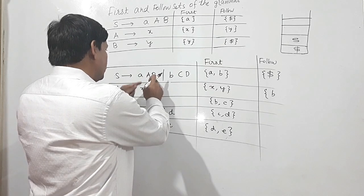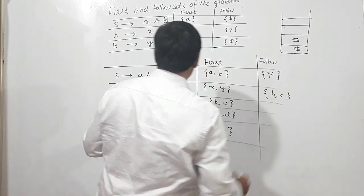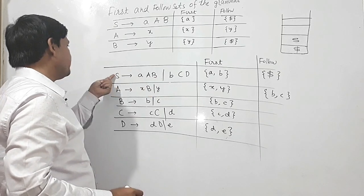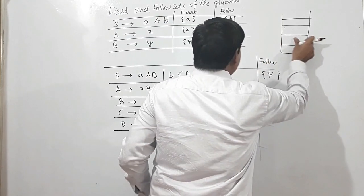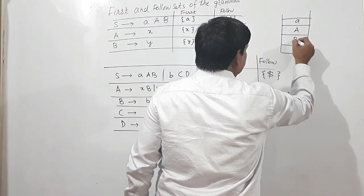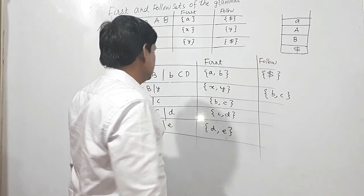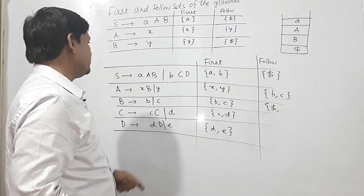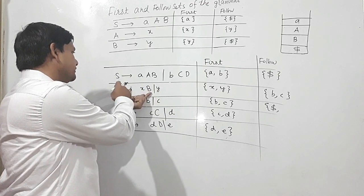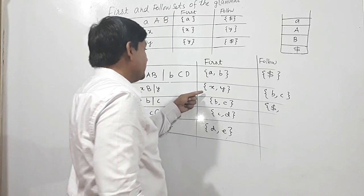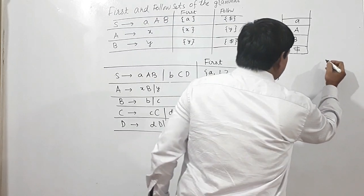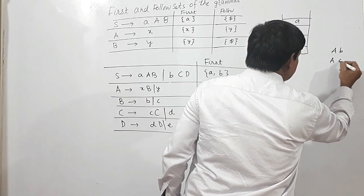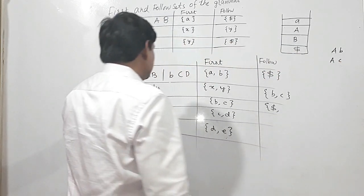Follow of A will be {b, c}. For Follow of B: from the production S→aAB, B is the rightmost non-terminal produced by S, so Follow of B is the same as Follow of S, which is dollar. So Follow of B includes dollar.